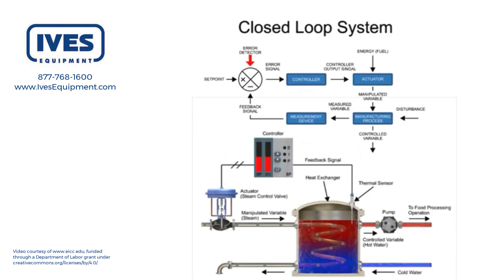The controlled variable is the actual variable maintained in the process. In this example, the controlled variable is the temperature of the water leaving the tank.